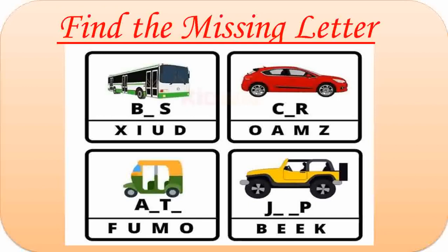Here are some vehicles. The name of the first vehicle is Bus. Missing letter here is U. B-U-S. Bus. Second one is Car. Missing letter is A. C-A-R. Car. Third one is Auto. Missing letters are U and O. A-U-T-O. Auto. Fourth one is Jeep. Missing letters are E and E. J-E-E-P. Jeep.